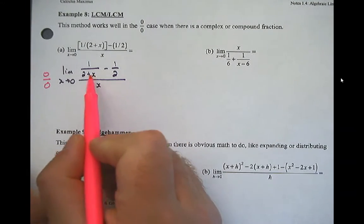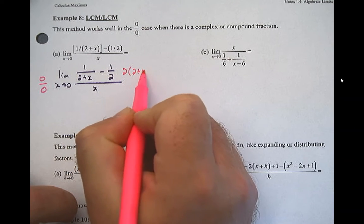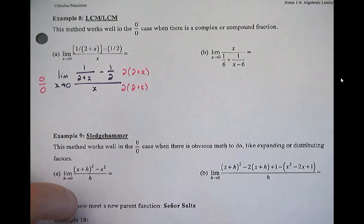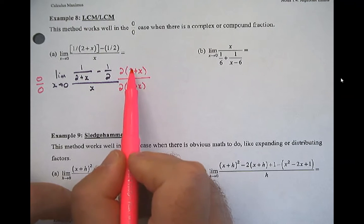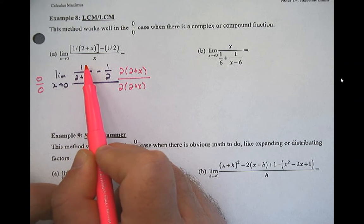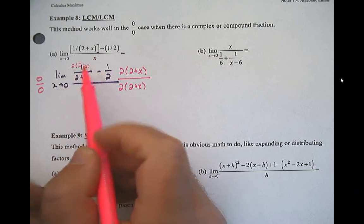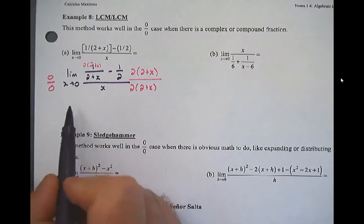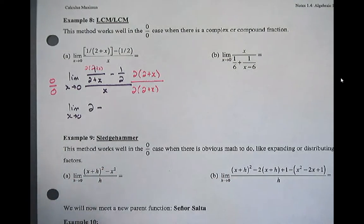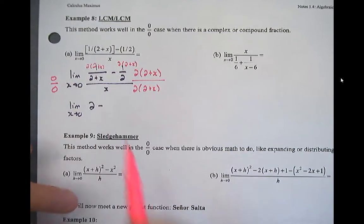I'm going to multiply by something that cancels both the two plus x and the two at the same time — so I multiply by two times the quantity (two plus x), top and bottom. When I distribute this in — it's over one, so it ends up on top — two times (two plus x) reduces, leaving just the limit as x approaches zero of two minus. Then when I distribute, two times (two plus x) means the twos cancel, leaving two plus x.